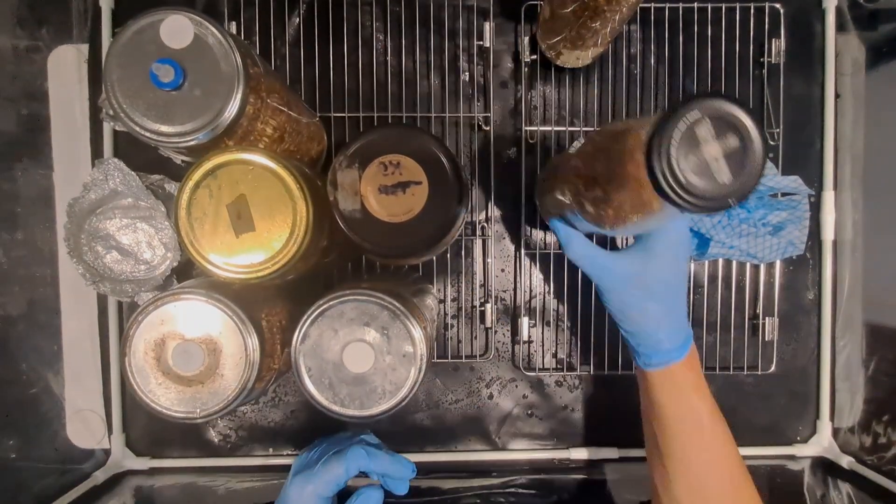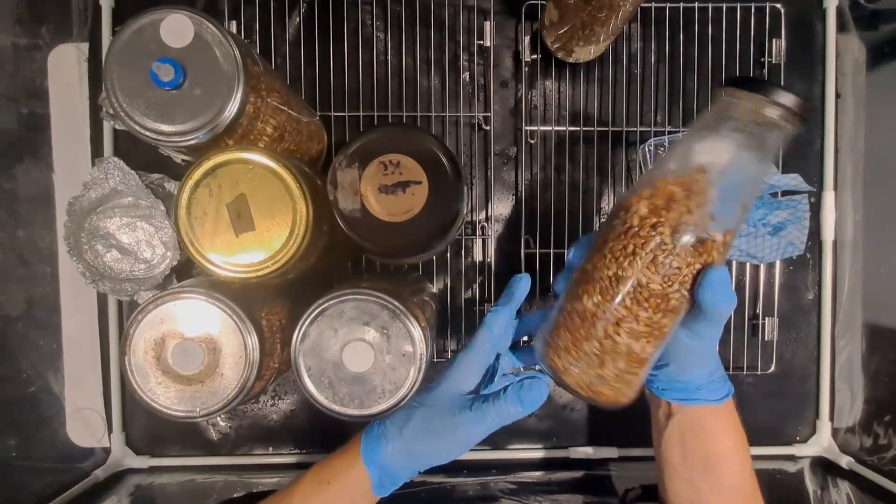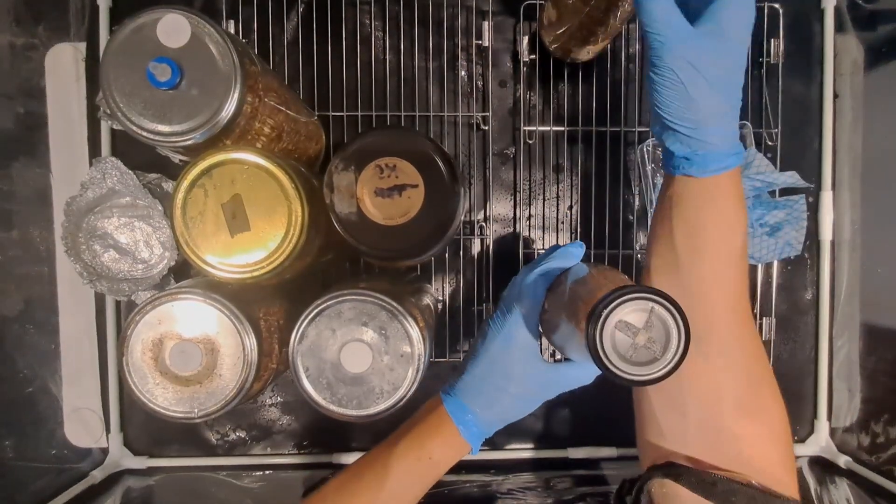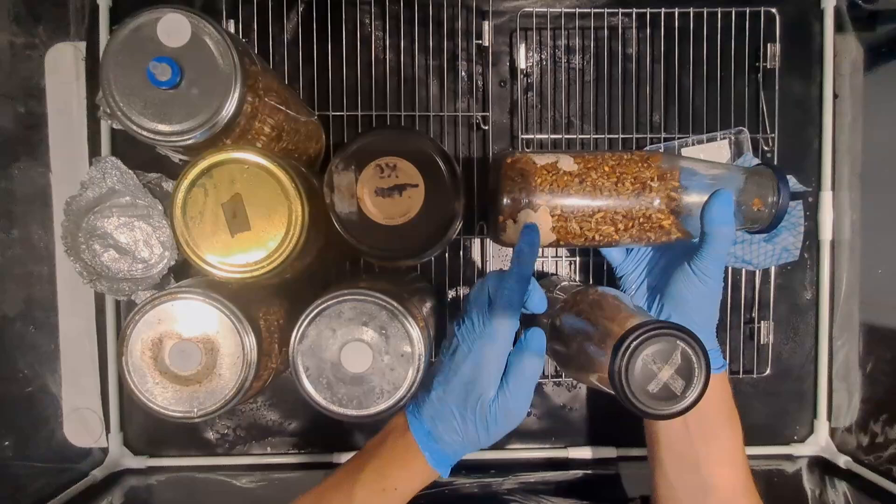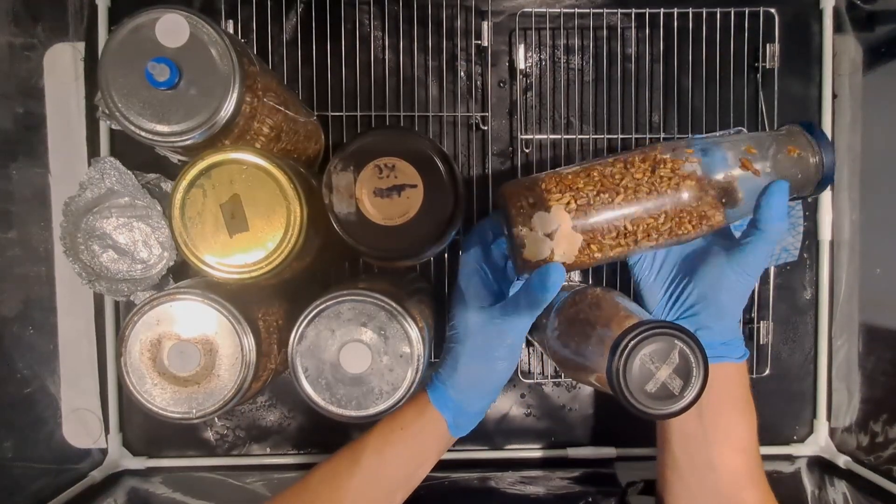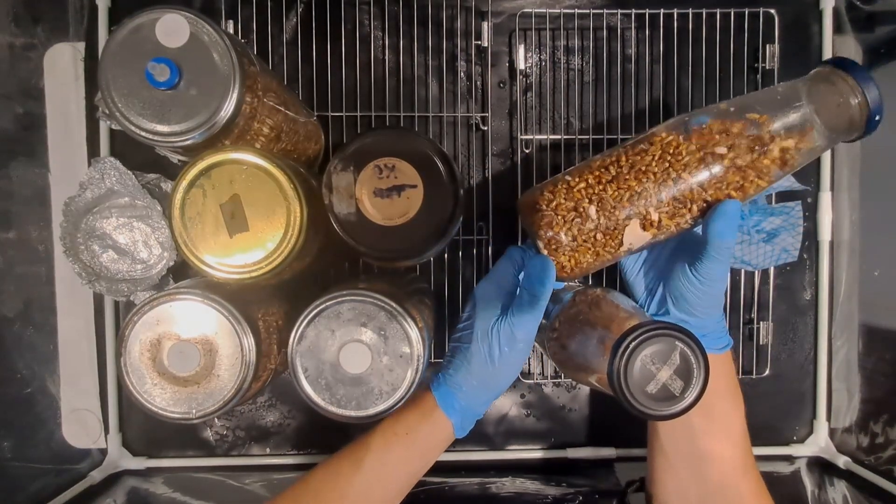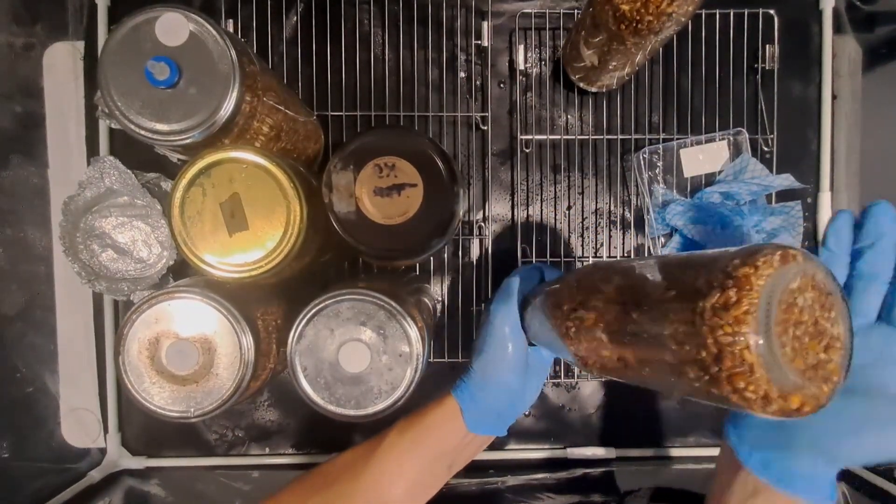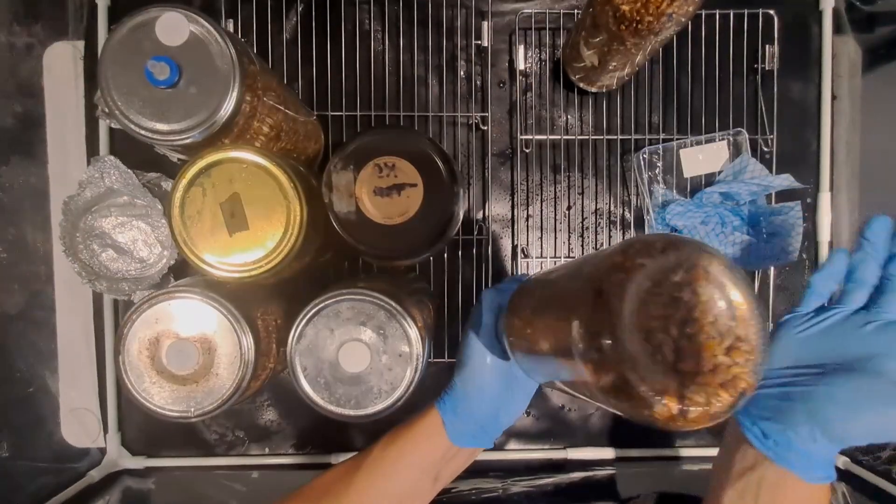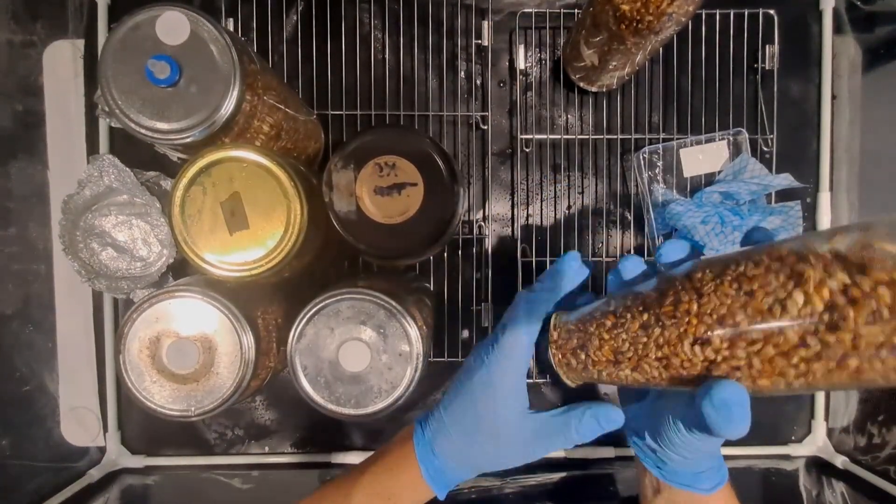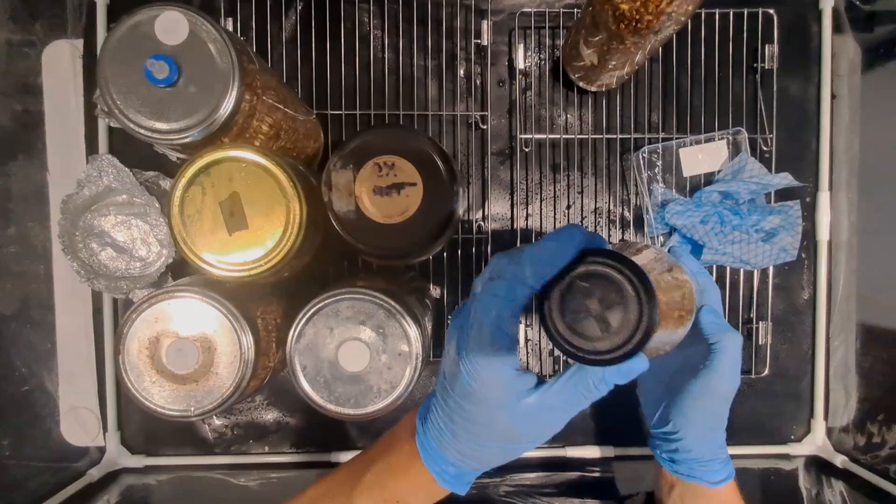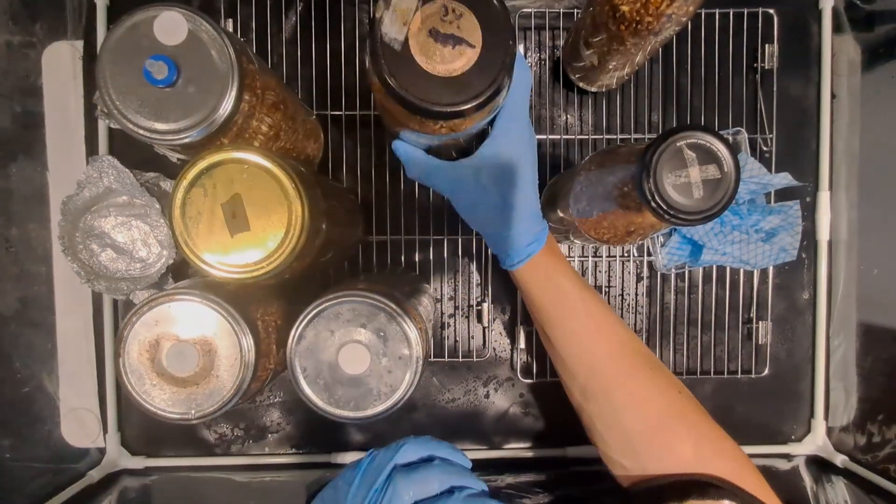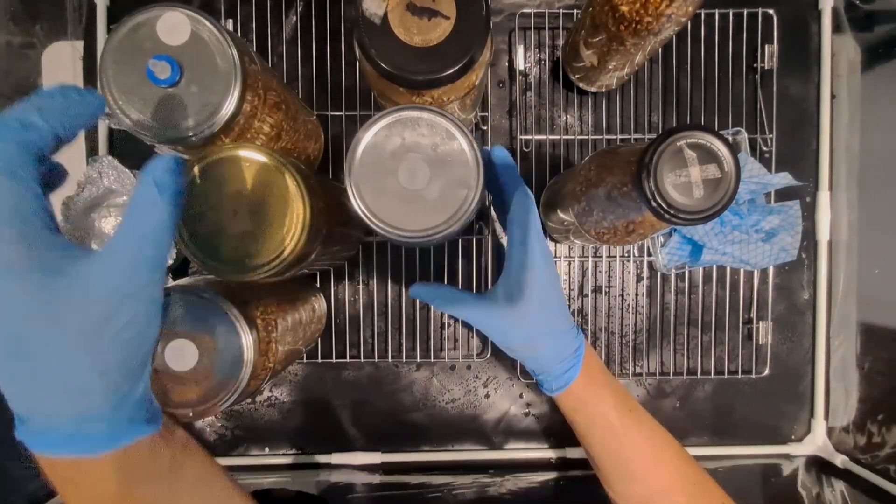So this is the donor jar. It doesn't look like it's got grain spawn in it because it's had a shake and a breakup. Normally you can't see the grain spawn after you've done a shake but if we have a look at this other jar which was way over colonized you can see the turkey tail which the grain spawn had started to create a stipe where the mushroom was fruiting in the jar. I'm just getting the grain spawn nice and loose here so it's easy to pour.